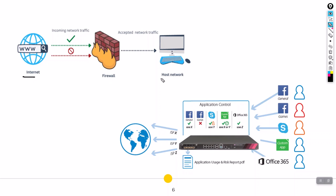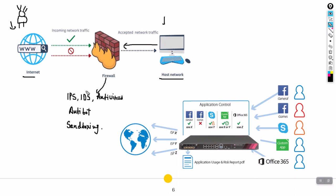This is the internet and this is our host network — our trusted network versus the untrusted network. Most of the bad guys sit on the internet, so we make policies on the firewall that allow our host machines from the trusted network to communicate to the internet, and we stop unwanted traffic with policies. Additionally, we have features like IPS, IDS, antivirus, anti-bot, and sandboxing. IPS detects malicious traffic based on signatures, antivirus checks for viruses inside packets, and sandboxing lets us run suspicious traffic in an isolated environment first before passing it to end machines.